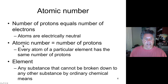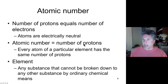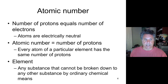We define the atomic number as the number of protons. The number of protons defines what element you're talking about. Hydrogen has one proton, oxygen has eight protons, and carbon has six protons. That number of protons defines the element. Every atom of a particular element has the same number of protons.